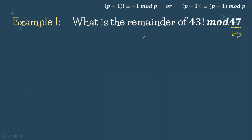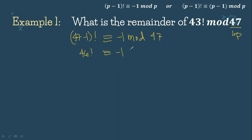Given that 47 is P, we can rewrite this as (47 minus 1) factorial is congruent to negative 1 mod 47. So 46 factorial is congruent to negative 1 mod 47. Now, 46 factorial can be rewritten as 46 times 45 times 44 times 43 factorial.